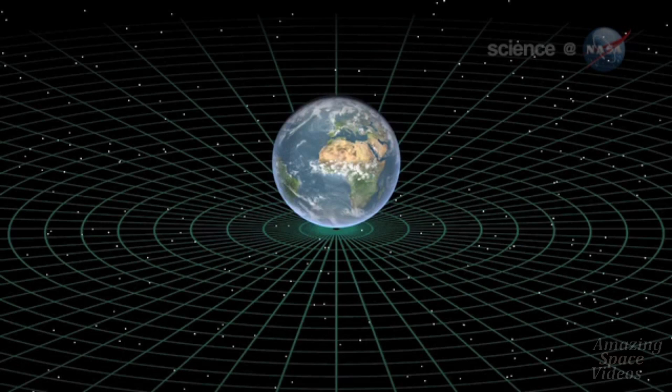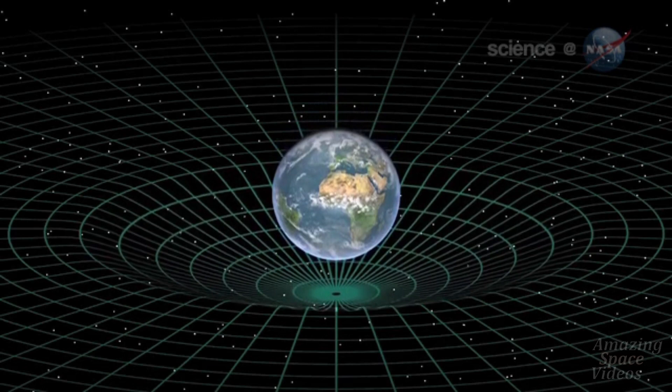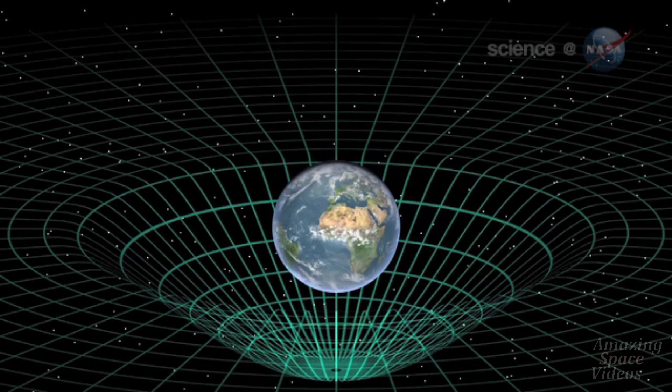Time and space, according to Einstein's theories of relativity, are woven together, forming a four-dimensional fabric called space-time. The mass of Earth dimples this fabric, much like a person sitting in the middle of a trampoline.